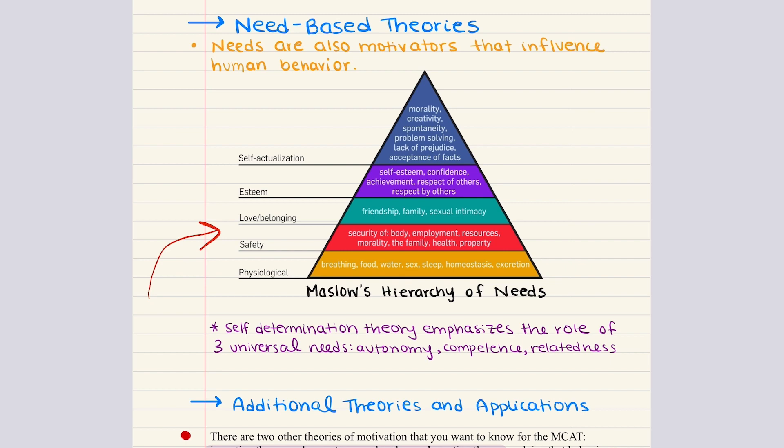Once a need is met, if additional needs exist, they will be satisfied based on priority. For example, a person's most basic motivation will be to satisfy physiological needs — breathing, food, water, sex, sleep, homeostasis, etc. This is followed by the need to establish a safe and secure environment: security of body, employment, resources, etc. Then love and belonging, and so on and so forth.